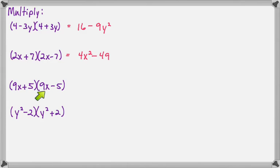First times first will be 9x times 9x, so that's 81x squared, skip the outer plus inner, last times last will be minus 25.